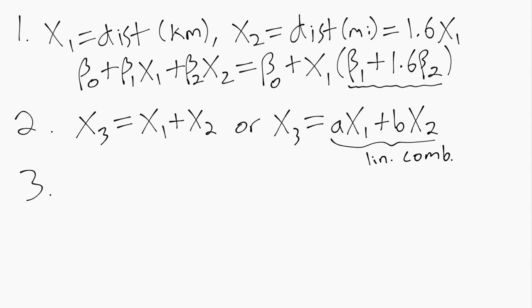Third example: if you imagine we have a dummy variable like x1 equals an indicator for female, and then we also had x2 as an indicator for not female.